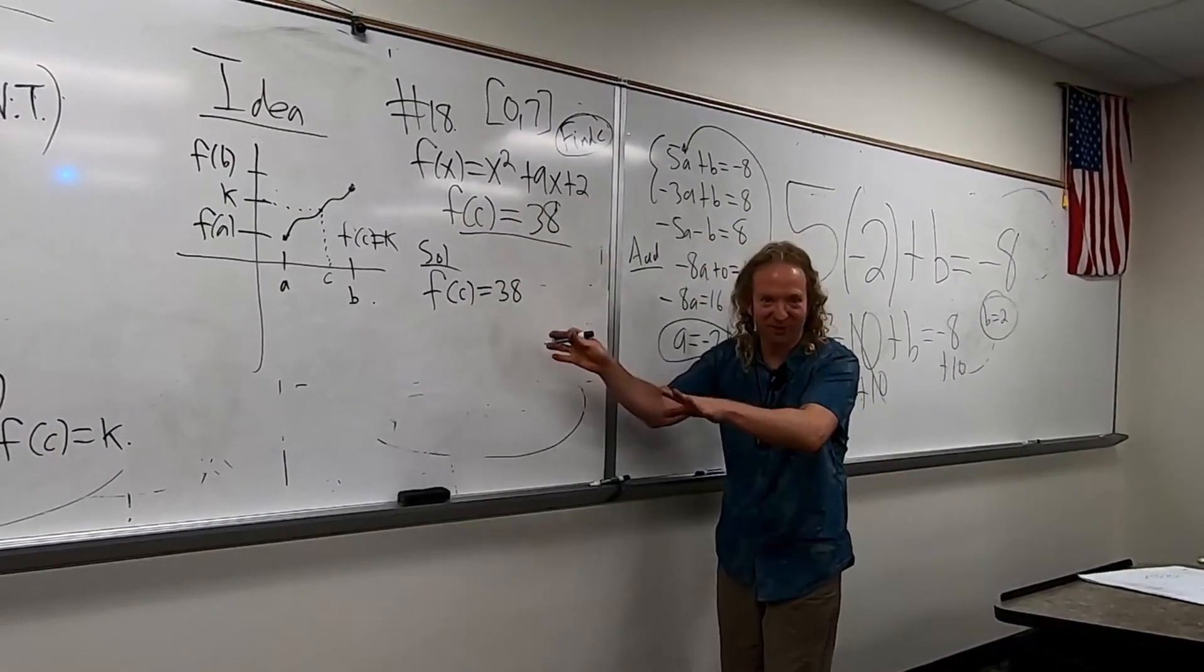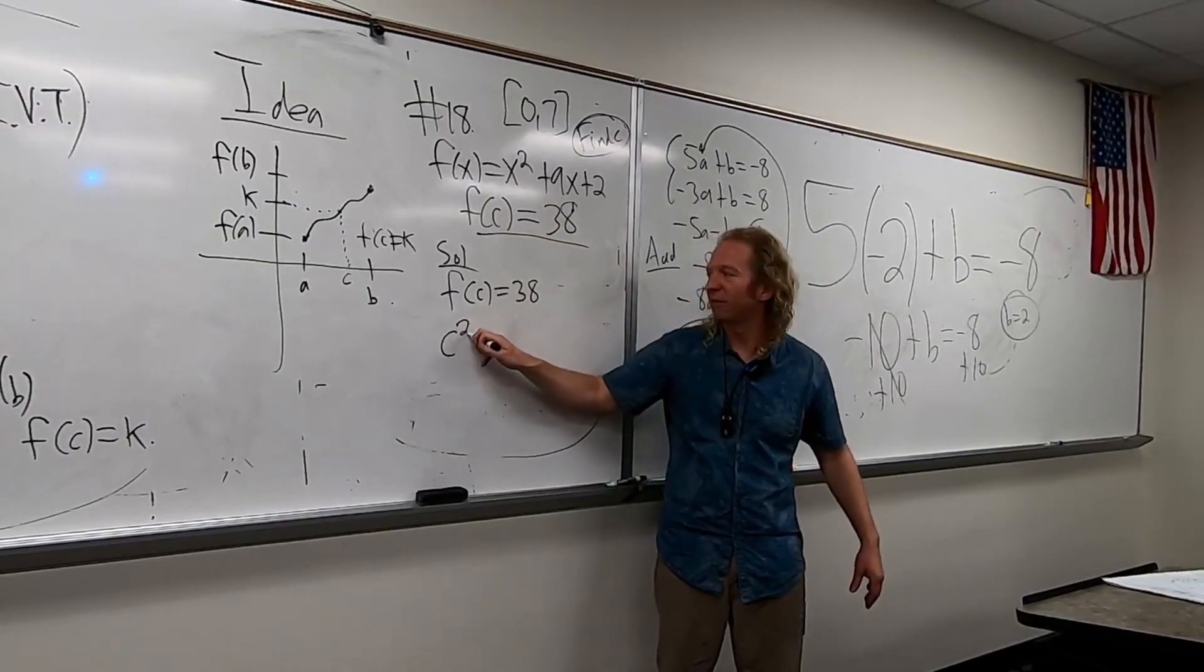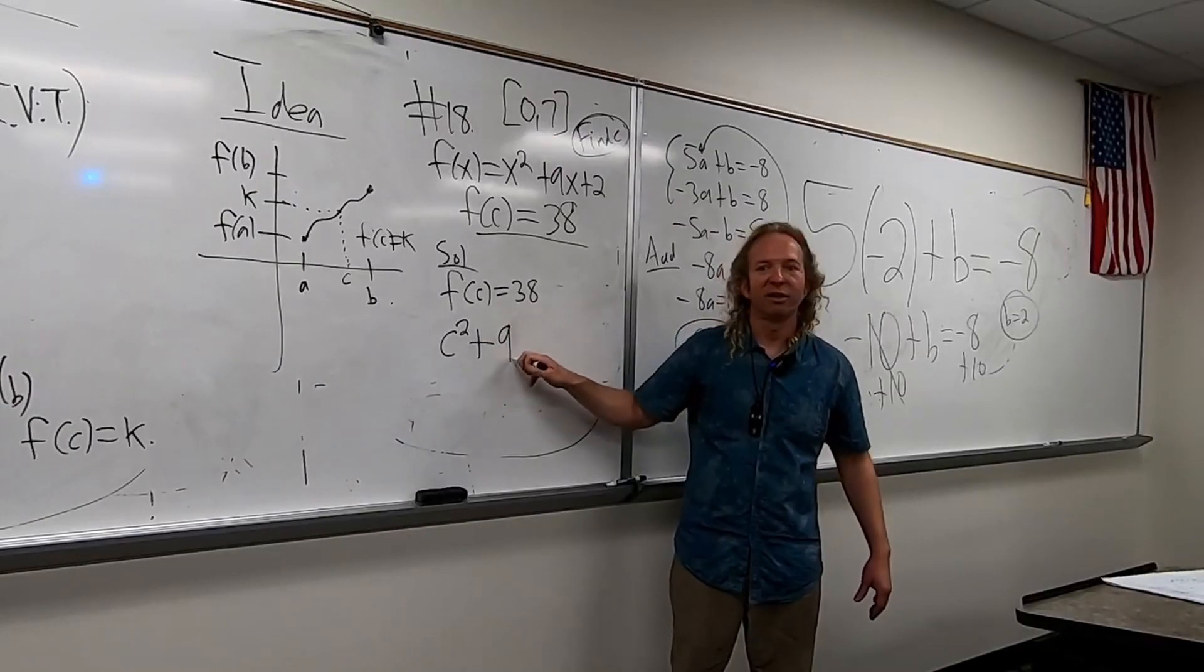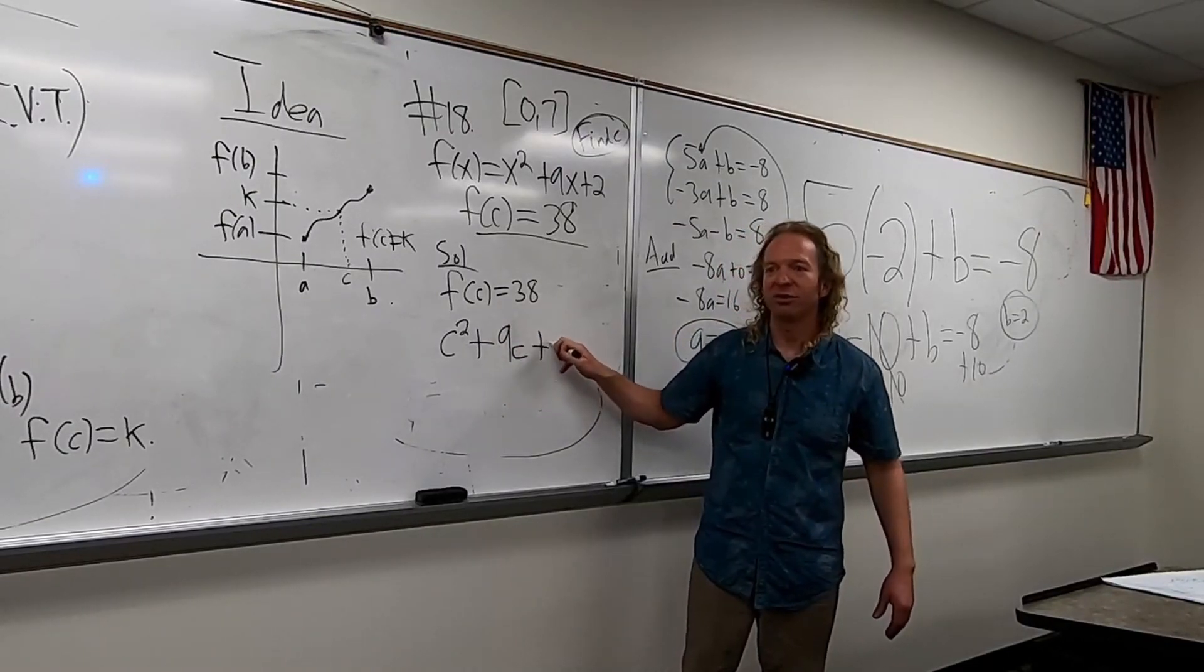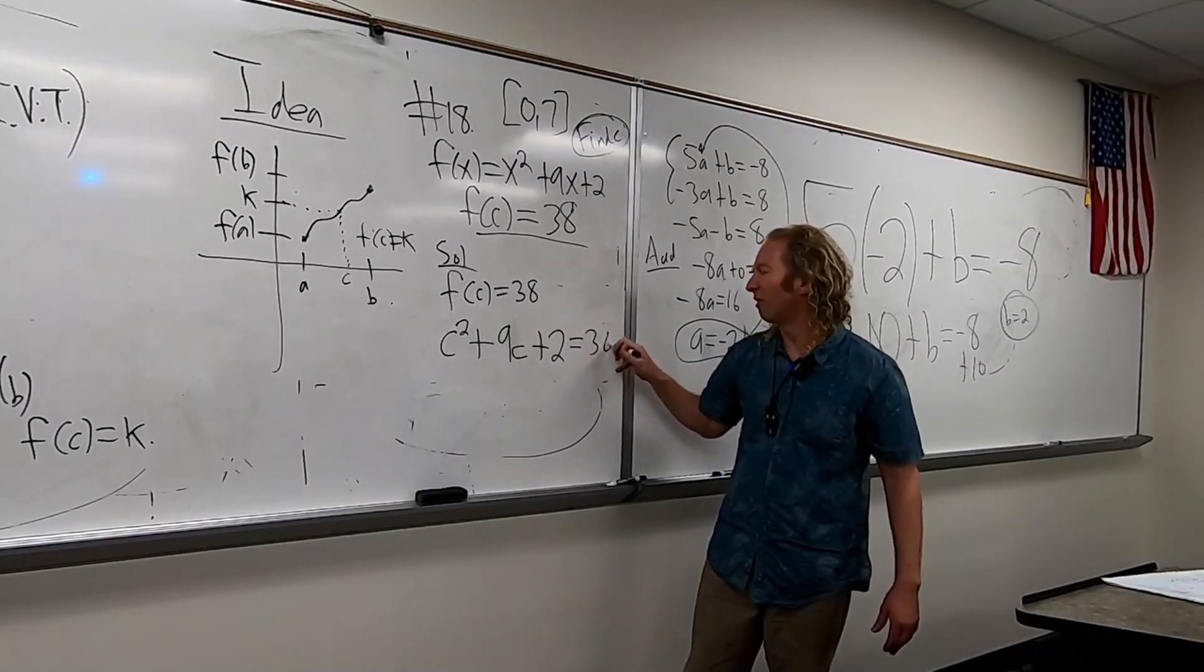So all you do is write this down. And then just plug in c for x, right? So c squared plus 9c plus 2. And what's that equal to? 38. Yep. That's all you got to do. It's really easy, right?